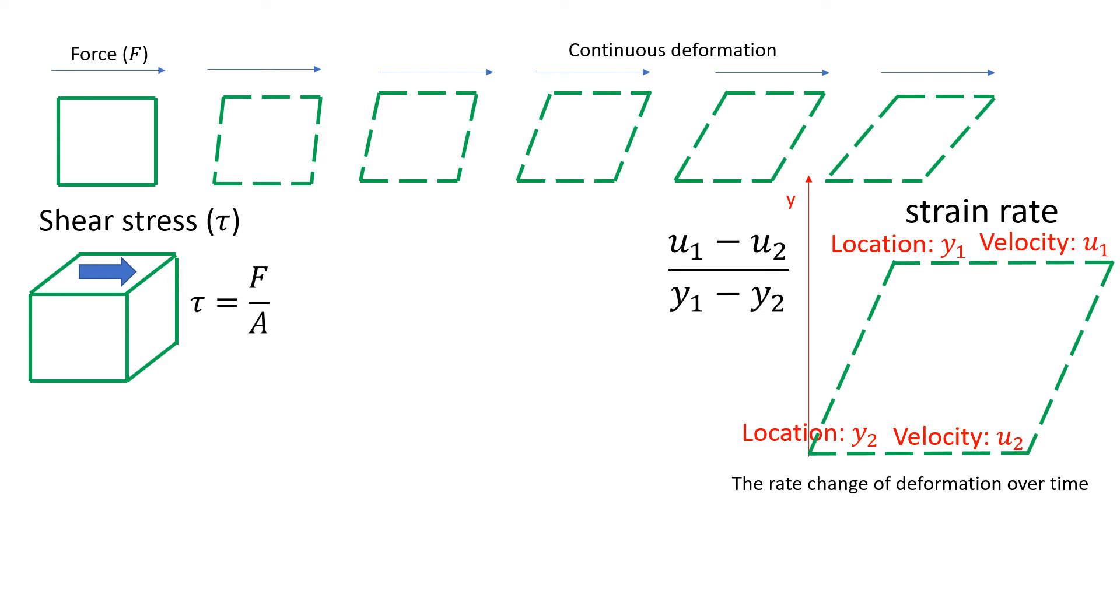Again, to eliminate the size effect, we use velocity difference divided by the location difference, y1 minus y2. To make it more mathematically rigorous, we assume that y1 is very close to y2, which leads to du over dy. That's the strain rate.